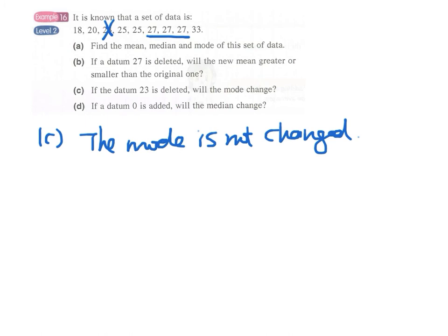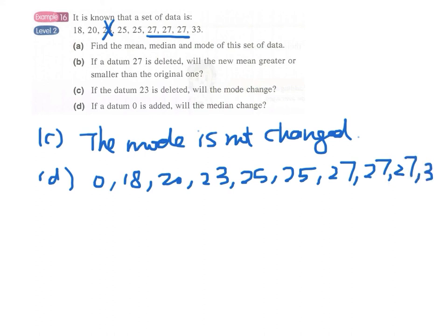And for part D, if a datum 0 is added, will the median change? So we add 0 to the set of data. And we assume—that's right, this is 25. We assume part A, part B, and part C, and part D are all independent cases, independent parts.